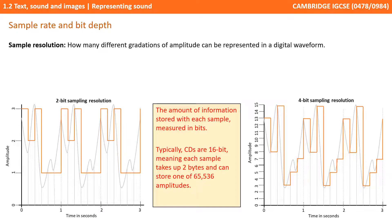If we doubled the sample resolution to 4 bits, well with a combination of 4 bits we can have up to 16 combinations, represented on the left axis by 0 to 15. We've doubled the amount of information we're storing with each sample, but the accuracy of our digital waveform compared to the original analogue one is much better.